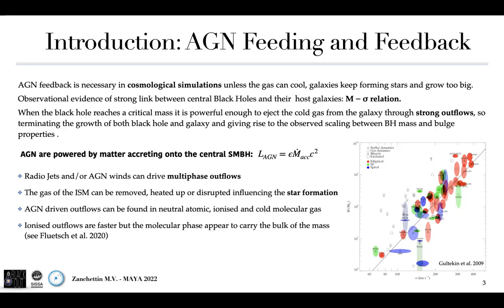Therefore, the AGN is powered by the matter accreting onto the central supermassive black hole. But which are the main ingredients? We know there is strong evidence that radio jets and accretion-driven winds can drive multiphase outflows. The gas in the galaxy can be removed, heated up, or disrupted, therefore influencing the star formation process of the galaxy.